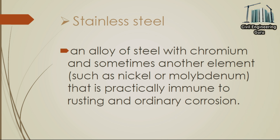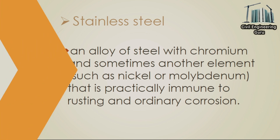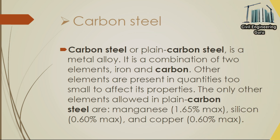Now moving toward the definition of stainless steel: an alloy of steel with chromium and sometimes another element such as nickel or molybdenum, that is practically immune to rusting and ordinary corrosion. Now moving toward the definition of carbon steel: carbon steel, or plain carbon steel, is a metal alloy — a combination of two elements, iron and carbon.